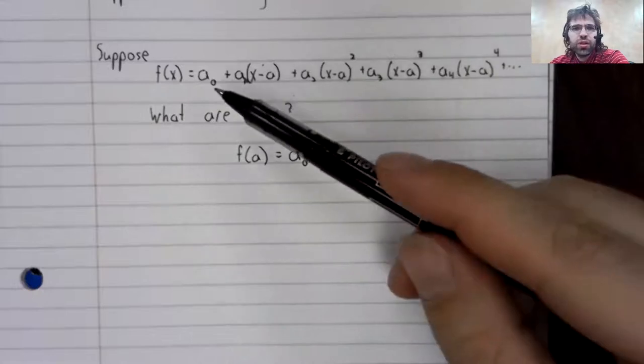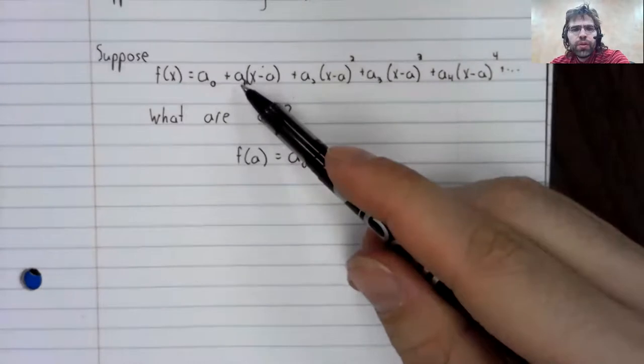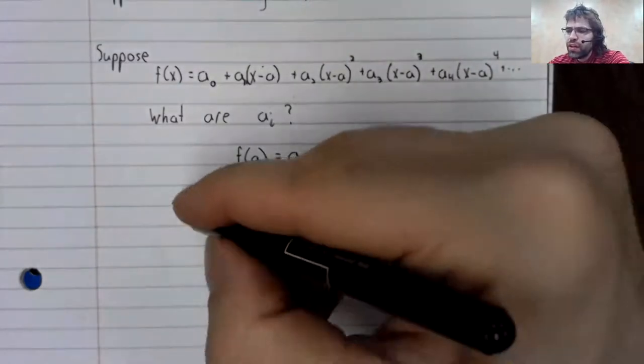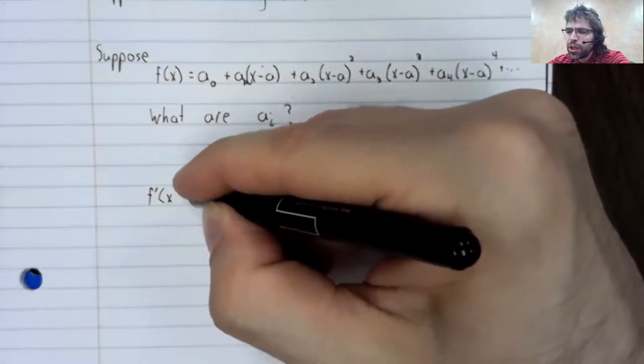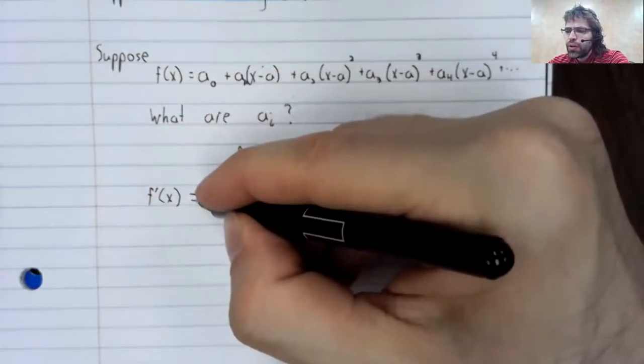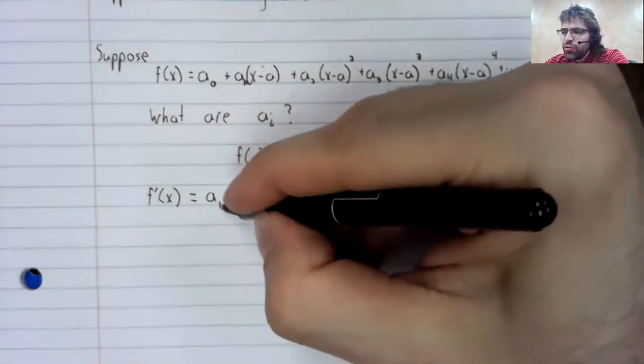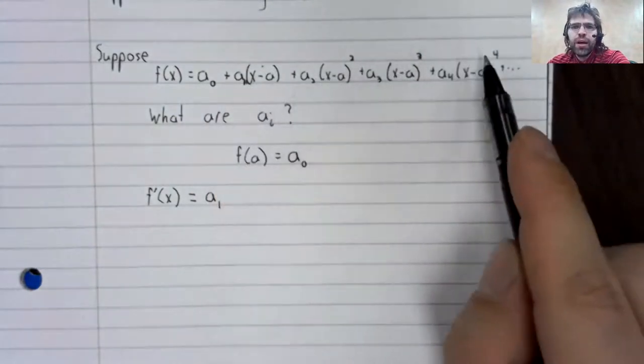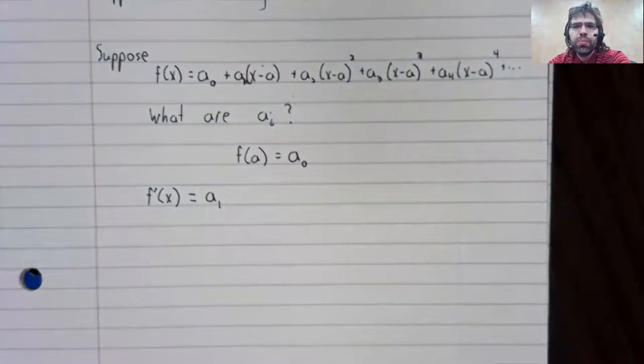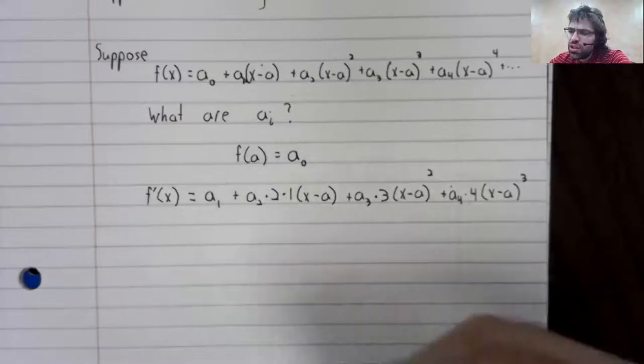Now let's go left to right. To find a sub one, we're going to take the derivative f prime. And when you're working with a power series, you simply take the derivatives term by term, as if you had a finite polynomial.